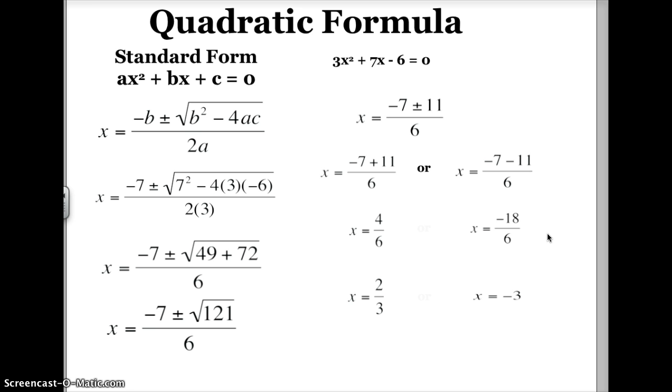So those are my two x-intercepts of this quadratic, 3x² + 7x - 6 = 0. And that means that this parabola is going to cross the x-axis at 2/3 and -3.